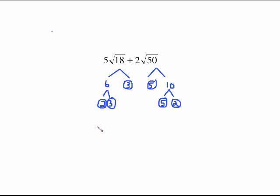So here's the trees on both of those. 18 goes to 6 times 3. 3 is prime. I circled it. 6 breaks into 2 times 3. 50 I broke is 5 times 10. 5 is prime. And then 10 breaks into 5 times 2.